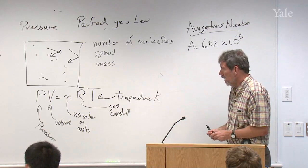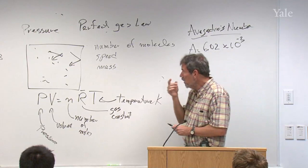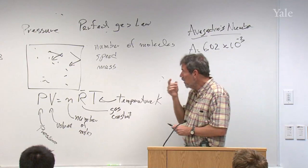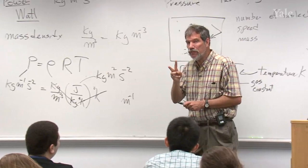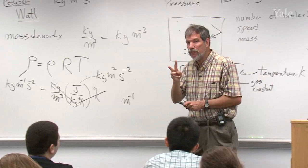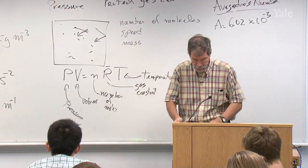The interesting thing about PV = nRT is that it seems to be independent of the mass of the molecule. You'd think a heavier molecule would impart more force as it bounces off the wall, but heavier molecules move more slowly at a given temperature, so those two factors cancel out. The pressure depends only on the number of molecules, not on their mass.